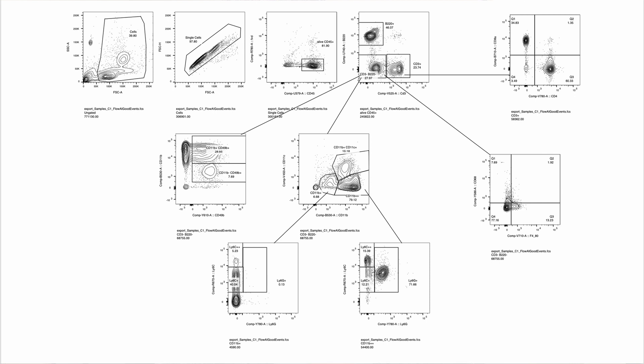So if we look at this example here, we can see up in the top left, they've gated the cells followed by the single cells to get the alive cells. So that's the third plot in. From that alive cell population, they then went on to gate CD3 versus B220. So basic T cells versus B cells. And you can see the three gates here. So B220 positive, CD3 positive, and then CD3 negative, B220 negative.